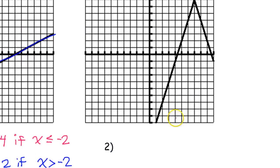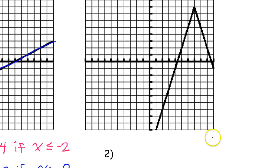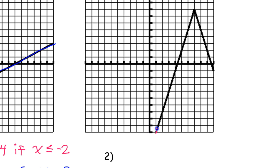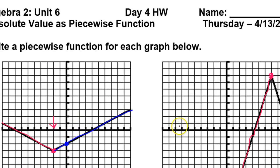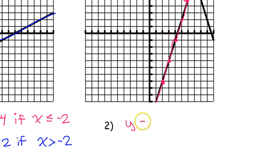I'm going to do that again, hopefully a little bit faster. Let's do the left branch first. Write a piecewise function. What is the slope? Putting some dots on here — it seems to be going up 3 over 1. So that means when I write this function, the slope is 3 because up 3 over 1.